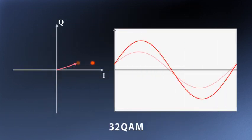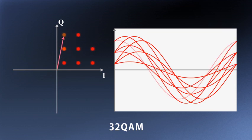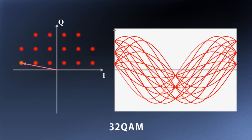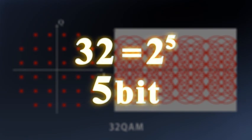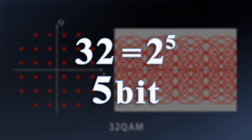32QAM means 32 or 2 to the fifth ways in which the amplitude and the phase of light of a certain wavelength can be combined. In other words, 32QAM technology creates a 5-bit optical signal.